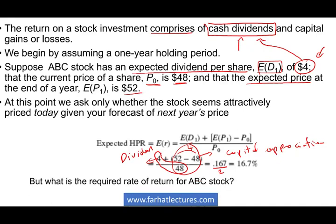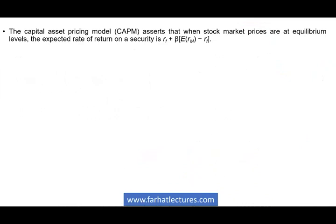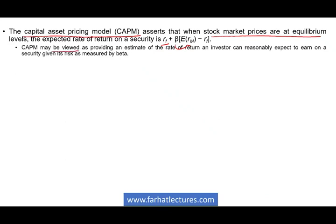But what is the required rate of return of ABC stock? How do we compute this required rate of return? We could use the Capital Asset Pricing Model, CAPM. Please go to my playlist and find the CAPM if you need a review. CAPM states that at equilibrium, the expected rate of return on any security equals the risk-free rate plus its beta times the risk premium. CAPM provides an estimate of the rate of return an investor can reasonably expect to earn on a security given its risk, measured by its beta.